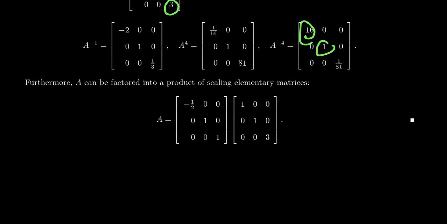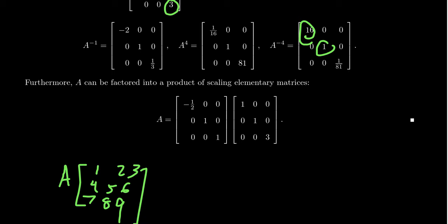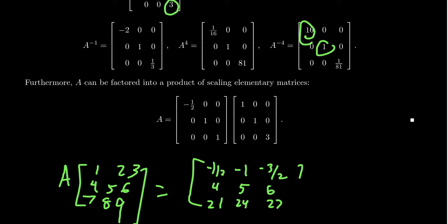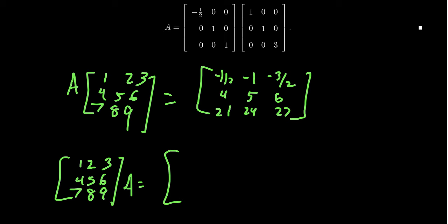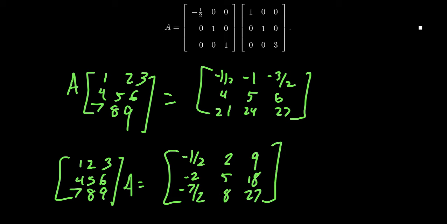As a quick example, if we take this matrix A and multiply it on the left by the matrix [1,2,3; 4,5,6; 7,8,9], we scale the first row by −1/2 to get [−1/2, −1, −3/2], scale the second row by 1 (unchanged: [4,5,6]), and scale the third row by 3 to get [21, 24, 27]. If instead we compute [1,2,3; 4,5,6; 7,8,9] times A on the right, we scale each column: the first column by −1/2 giving [−1/2, −2, −7/2], the second column by 1 giving [2, 5, 8], and the third column by 3 giving [9, 18, 27]. We can see that these results are not equal — matrices don't typically commute — but diagonal matrix multiplication is easy: left multiplication scales rows, right multiplication scales columns.